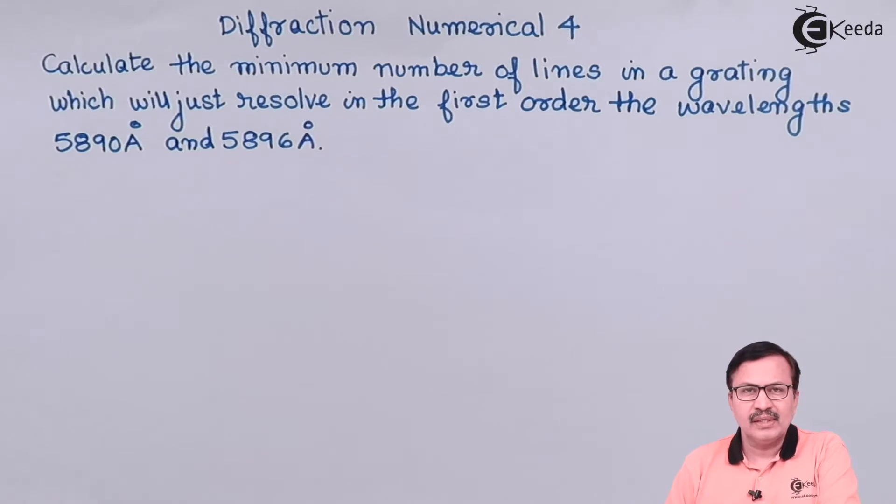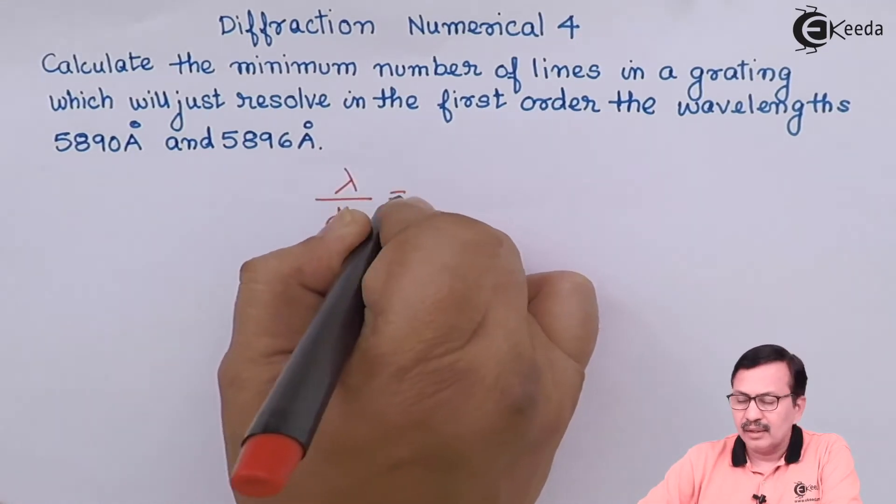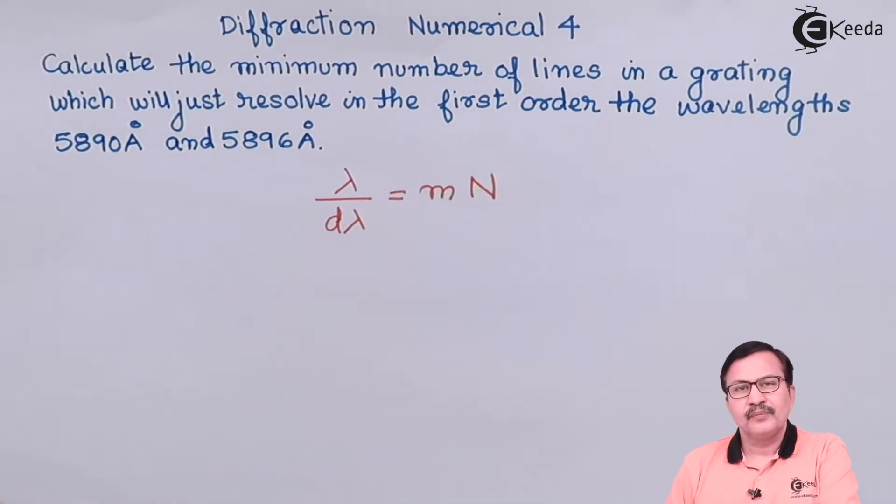First, we write down the formula for the resolving power. Lambda over d lambda equals m times N, and we're supposed to find the value of N in this expression.